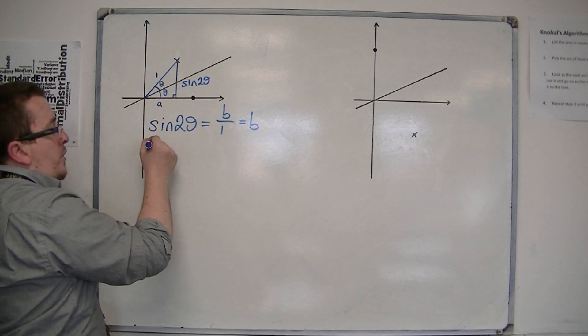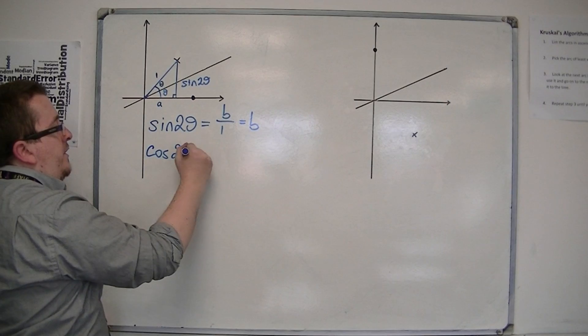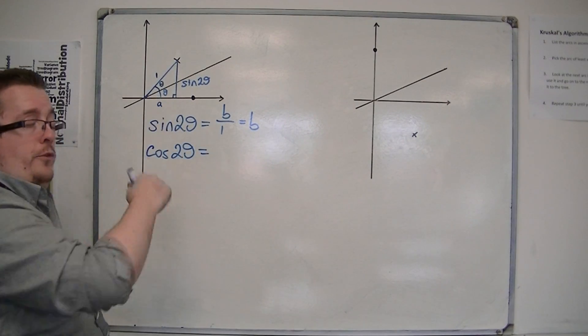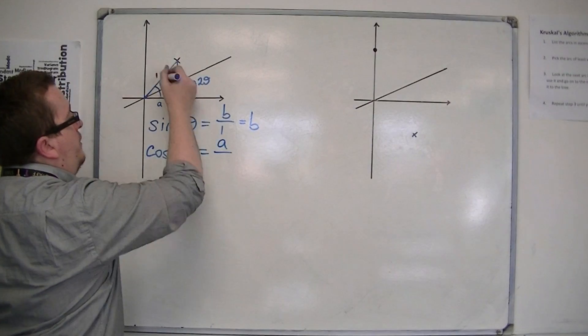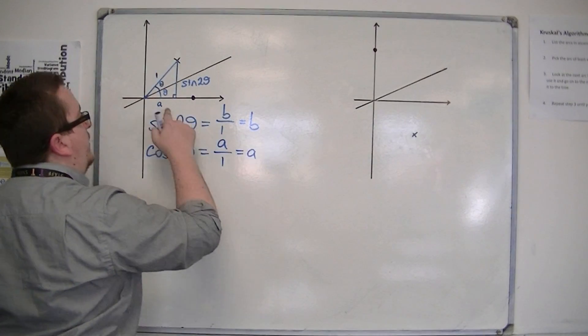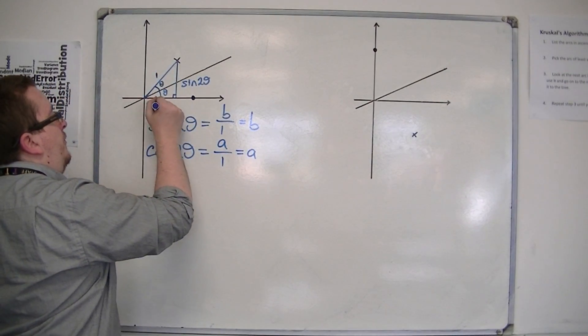Now if I look at cos of 2 theta, cos of that angle, well, cosine is the adjacent a over the hypotenuse 1. So that means that a is just cos 2 theta.